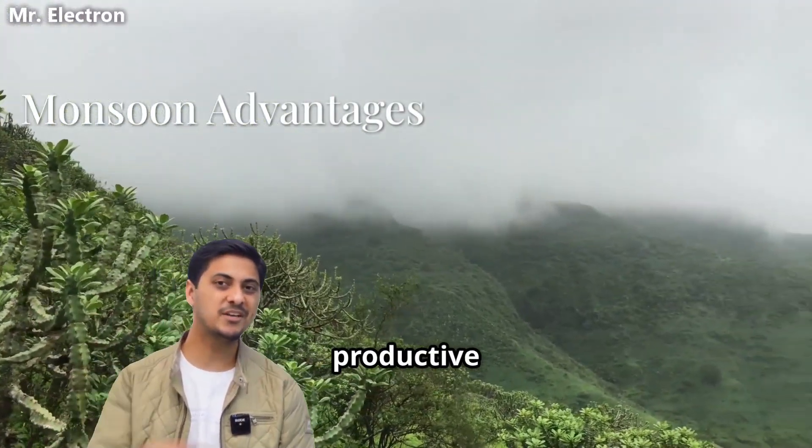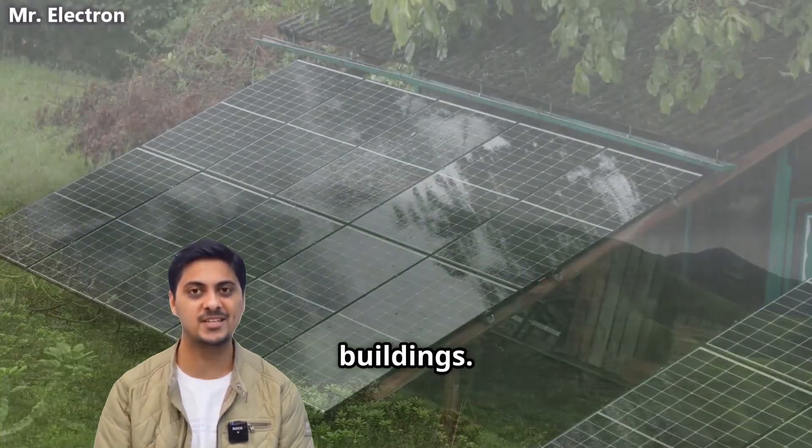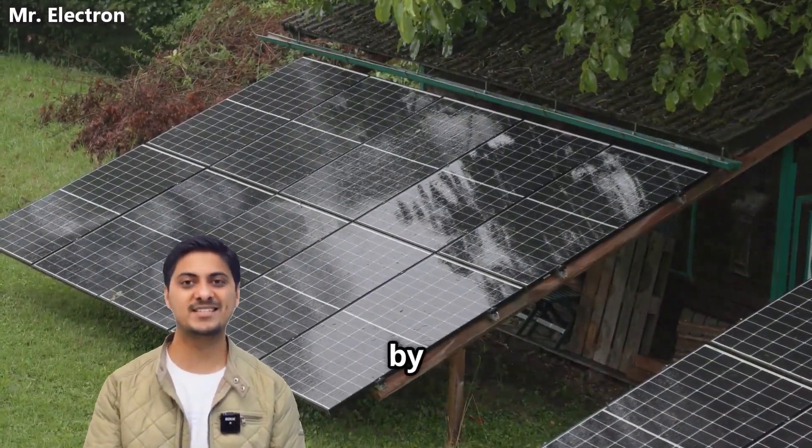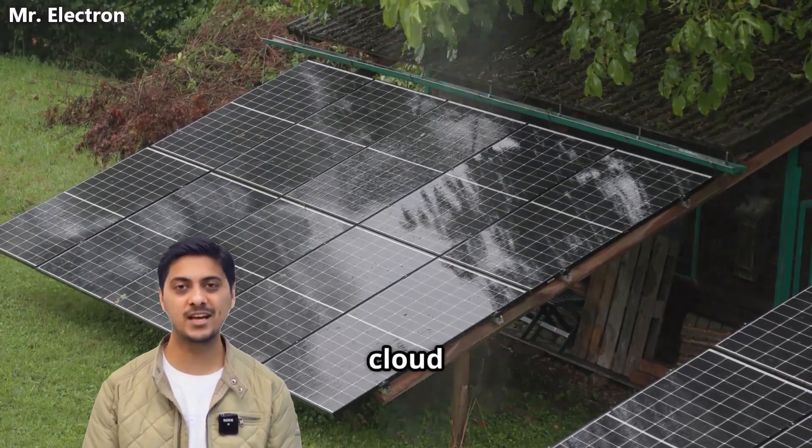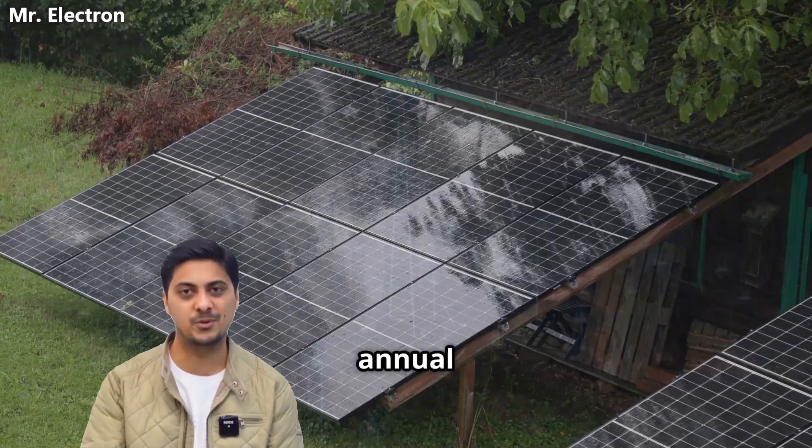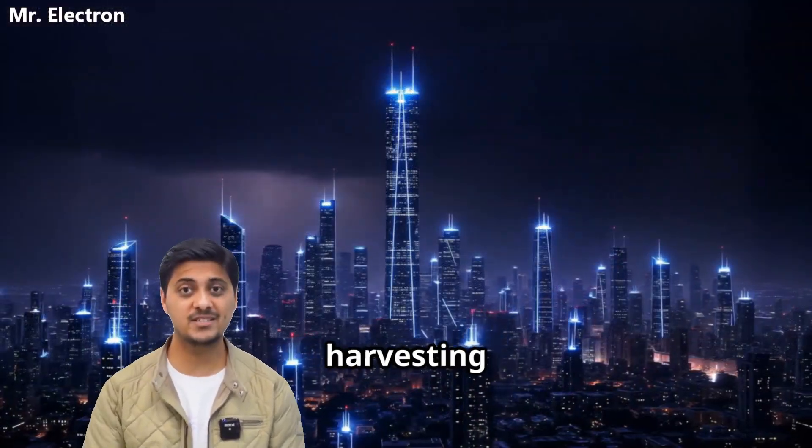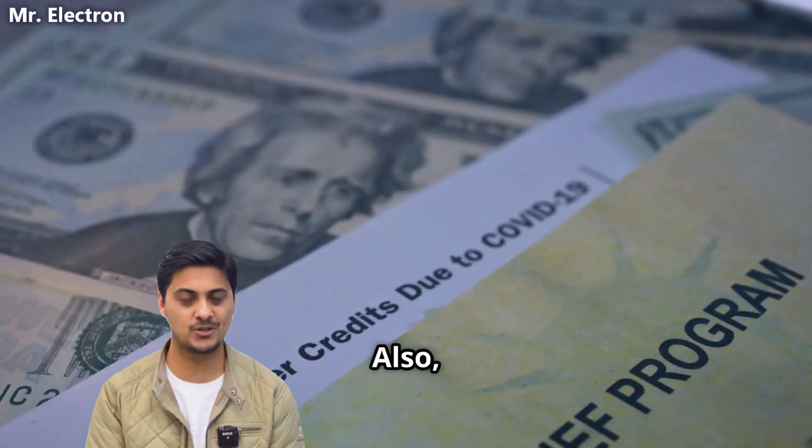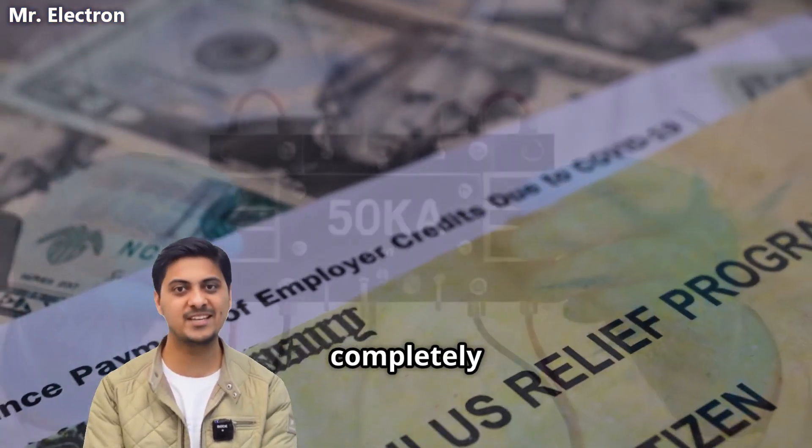Monsoon seasons become incredibly productive for lightning-equipped buildings. During India's monsoon months, when solar panel efficiency drops by 60 to 70 percent due to persistent cloud cover and frequent rainfall, lightning activity reaches its annual peak. Buildings with lightning harvesting systems actually generate more electricity during monsoon season than during clear weather periods.